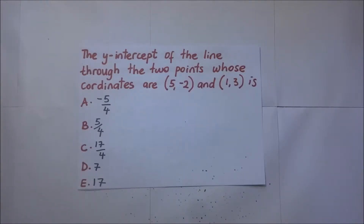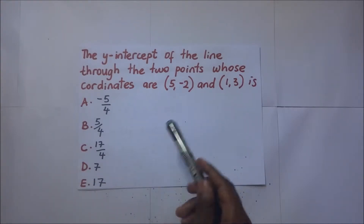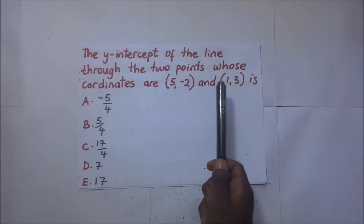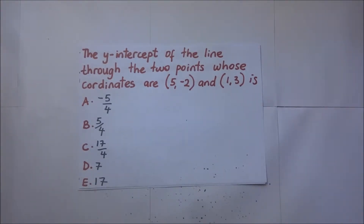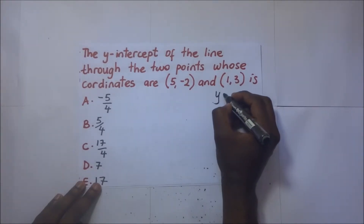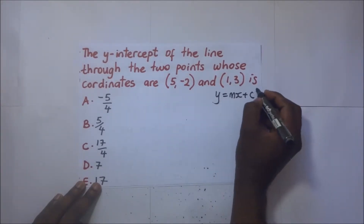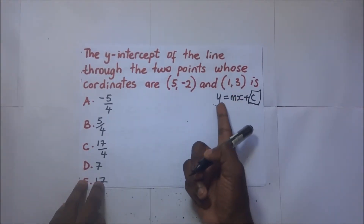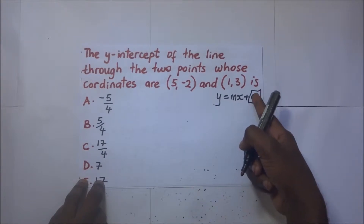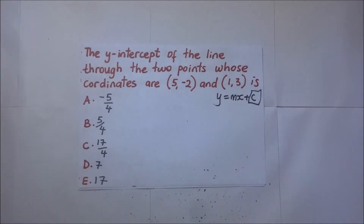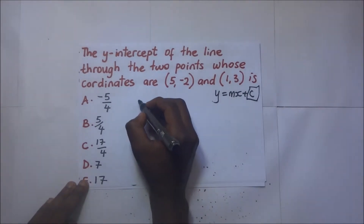Now we need the y-intercept of the line through two given points. We will find the equation of this line in the form y = mx + c, where c is the y-intercept. We begin by finding the gradient, which is the value of m.